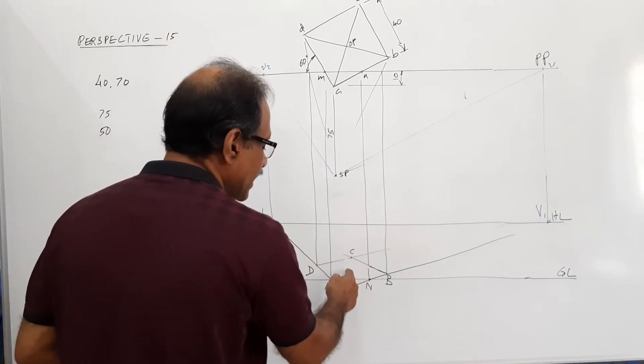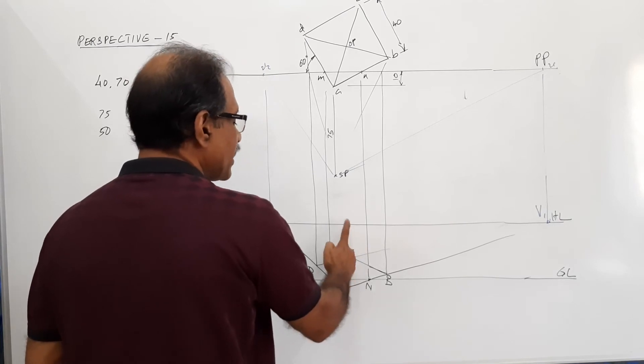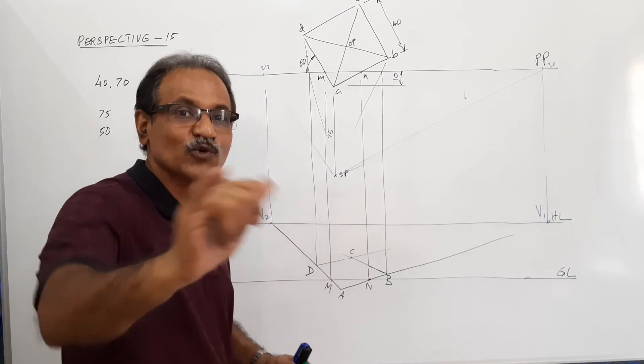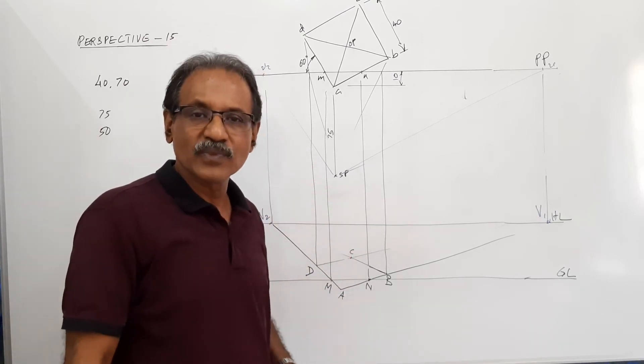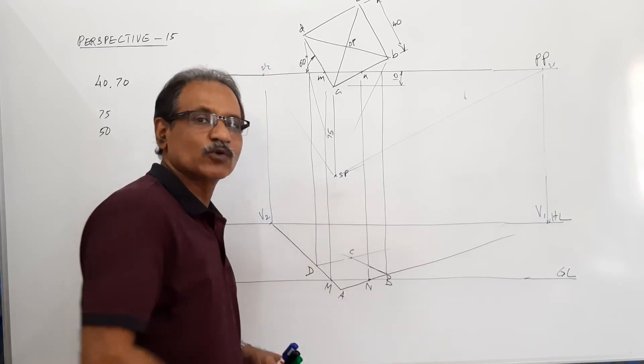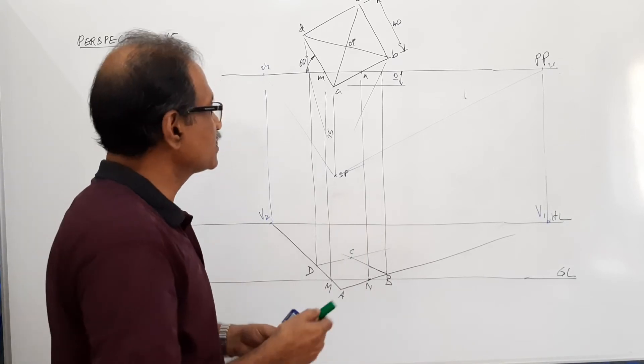If you draw the diagonal, you get the bottom point O. But where is P? The height OP in the perspective is not 70 long. Why? Because the axis is not on PP. So the axis in the perspective will not be 70 long. Even though you get O, you will not get P.